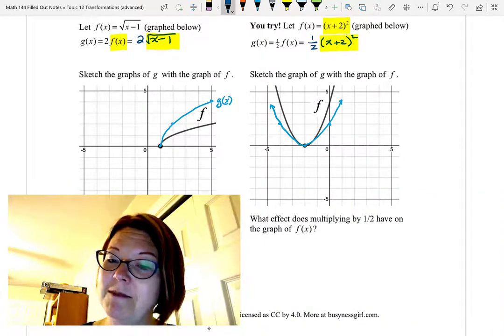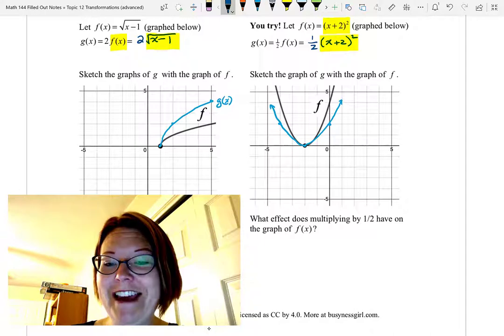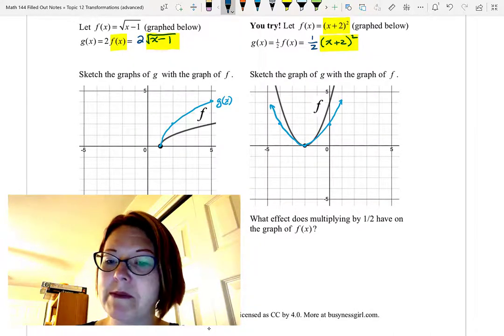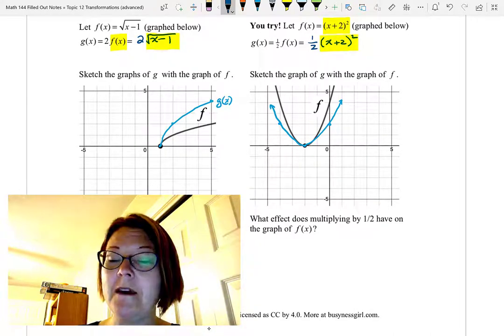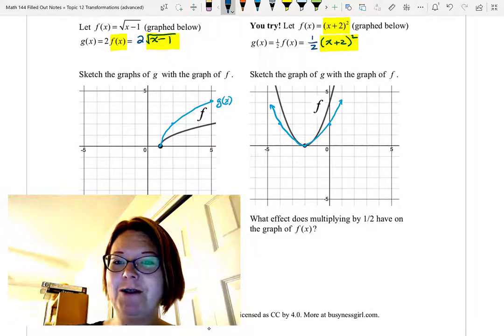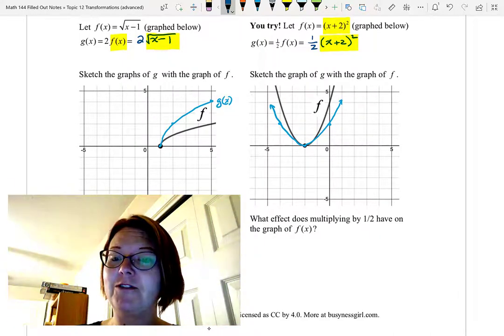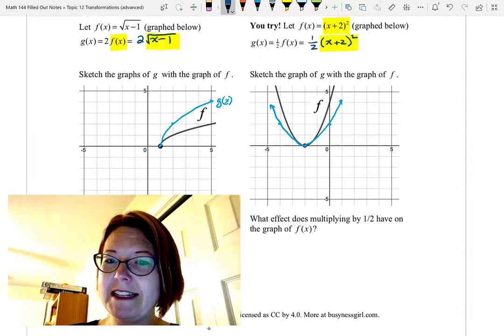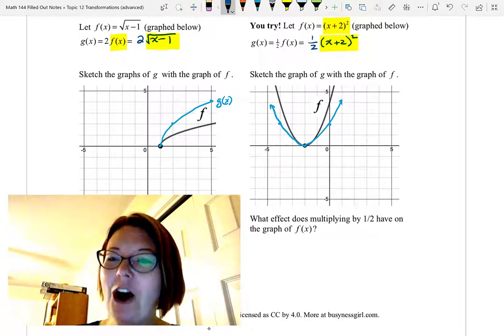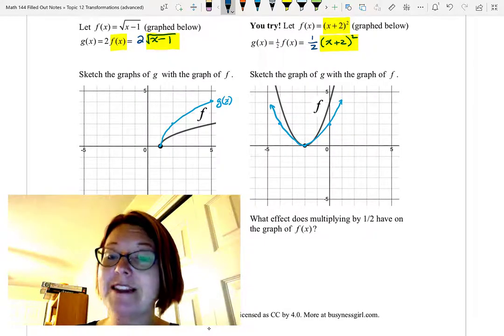What effect did multiplying by 1 half have on the graph of f(x)? Well, when we multiplied the graph by 1 half, we compressed the values of f(x) by a factor of 2. Or another way to say that is that we multiplied all of the y values of f(x) by 1 half.